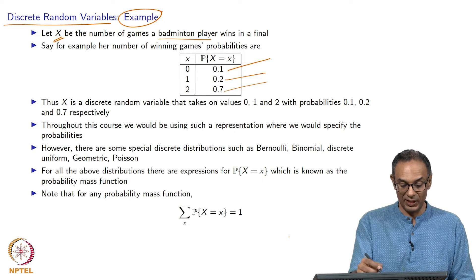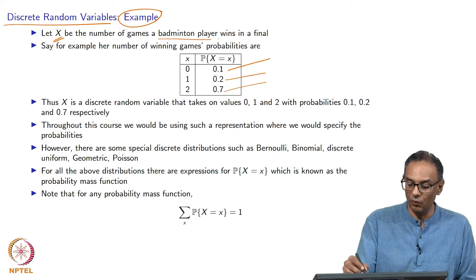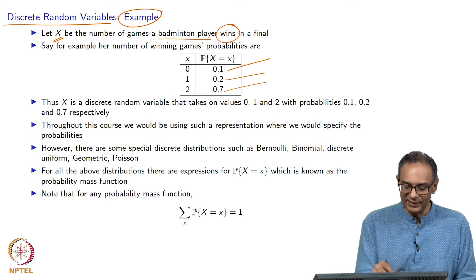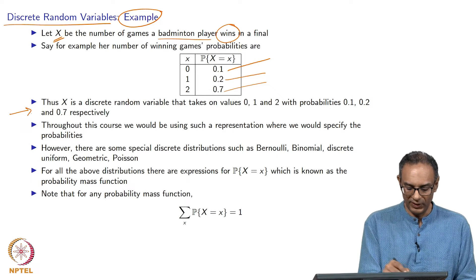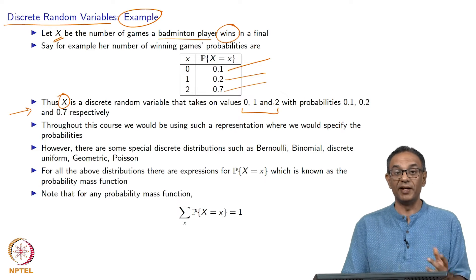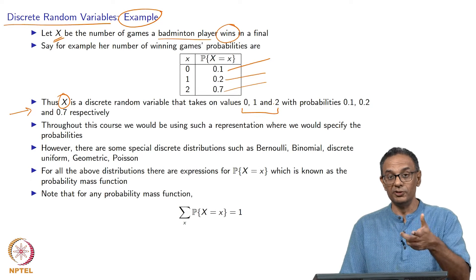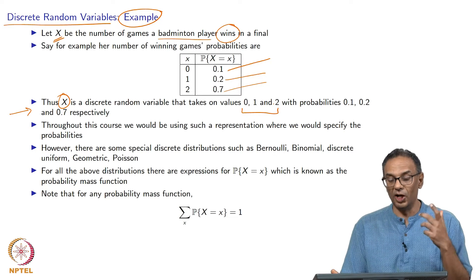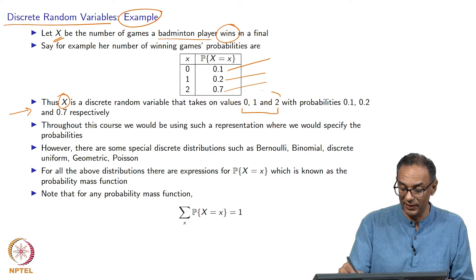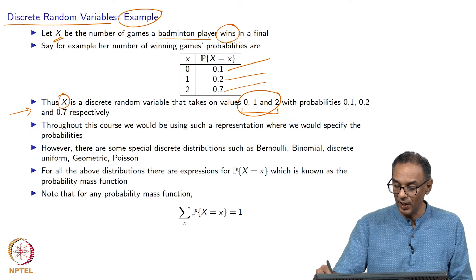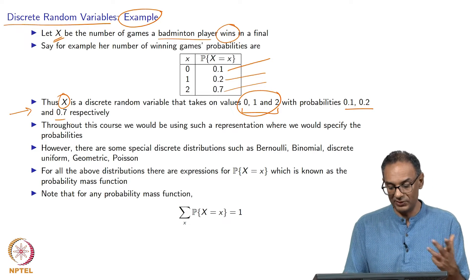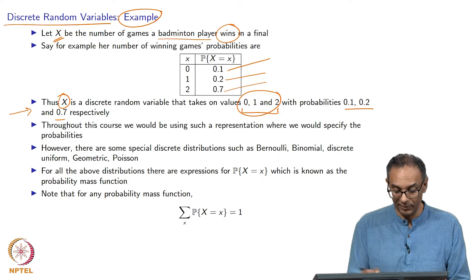So x is a discrete random variable that takes on 3 values. Previously, rolling two dice gave a discrete random variable taking values 2, 3, 4 all the way till 12. This time it only takes 3 values — 0, 1, or 2 — with probabilities 0.1, 0.2, and 0.7. That is how we characterize this random variable.